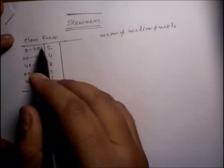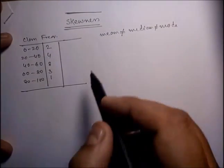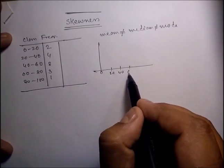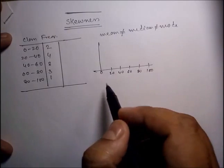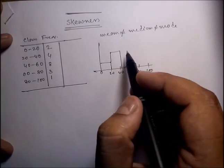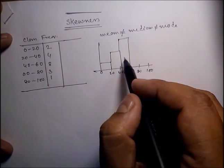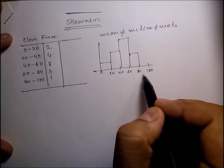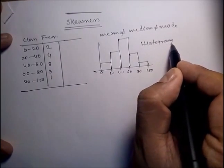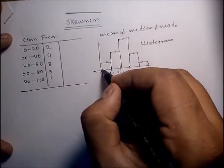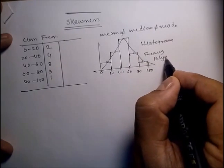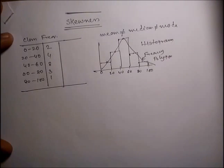For this particular data, we can draw the histogram. The classes are 0–20, 20–40, 40–60, 60–80, and 80–100 with frequencies 2, 4, 8, 3, and 1 respectively. Now if you connect the midpoints of the histogram bars, we can draw a figure which is called a frequency polygon.